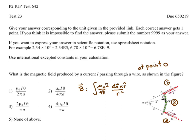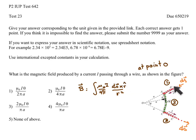In the Biot-Savart law, ds is the length vector of the wire along the direction of current I. On part one, this is ds, and on part two, this is ds. You can see that ds in part one and ds in part two are both along the radial direction. The unit vector r-hat points from ds to the point O where we want to calculate the magnetic field.